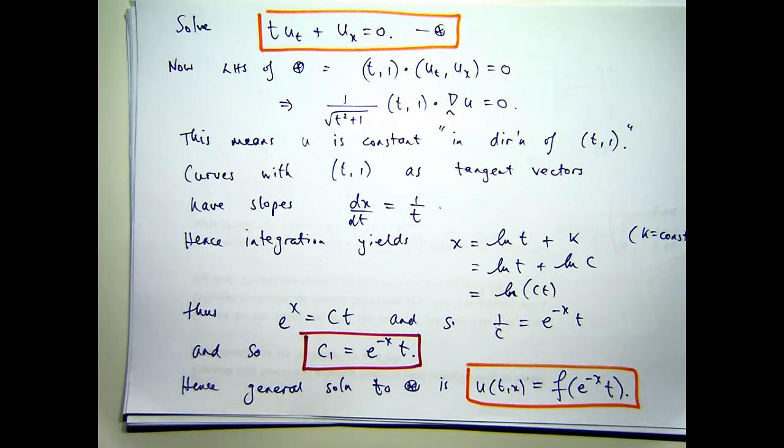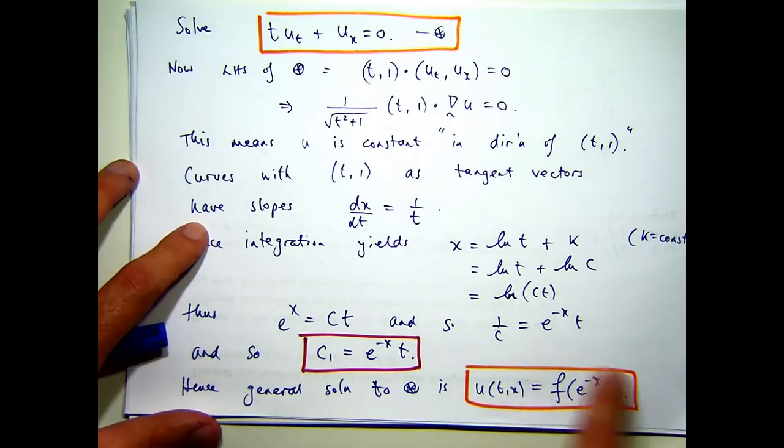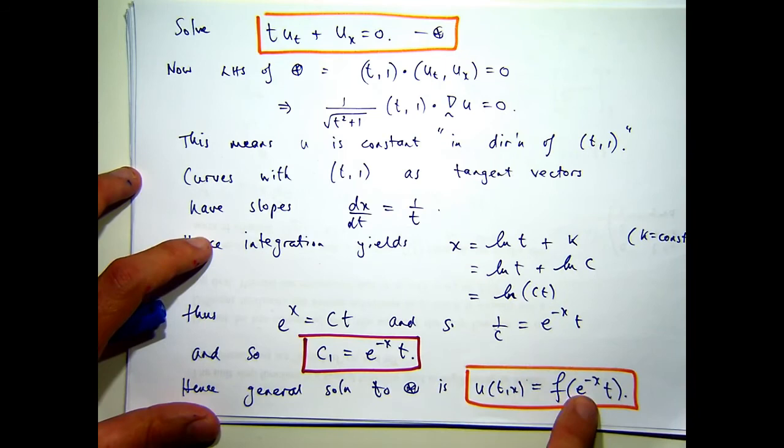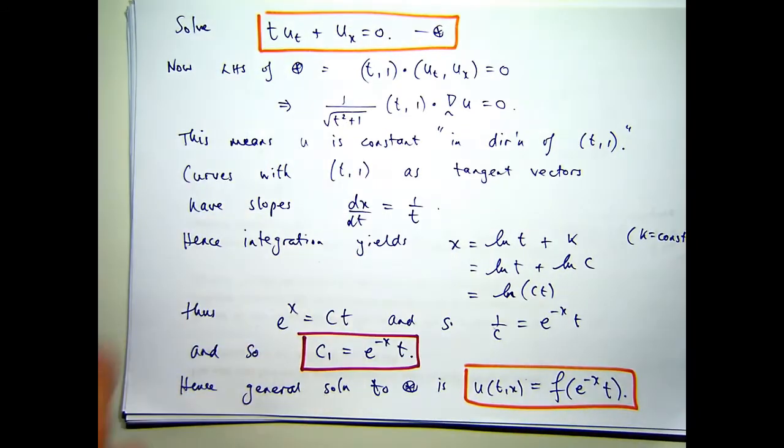So, F is like, you know, it plays a similar role as constants of integration do for, say, ODE's or basic integration. Now you can check, you can check, to verify that this form actually does solve the star equation. Just by using the chain rule. It's easy to do. In fact, we do it all the time in first year.